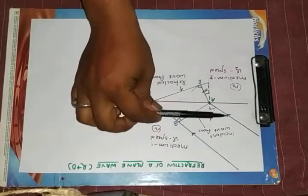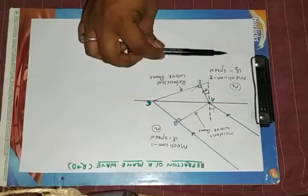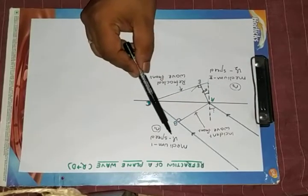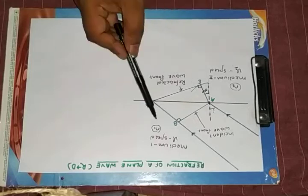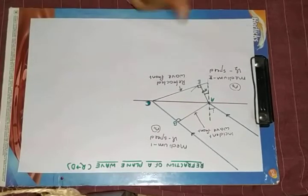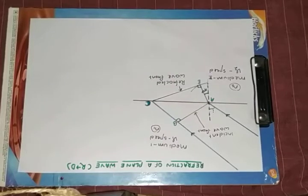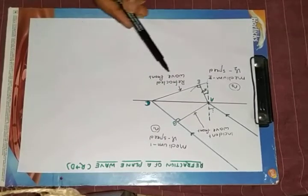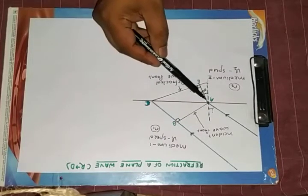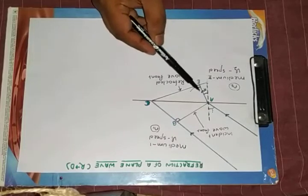This part is rarer medium, this part is denser medium, where light speed is v1 and light speed is v2. Medium refractive index n1, medium refractive index n2. Now after refraction, obviously it is traveling from rarer to denser, it is